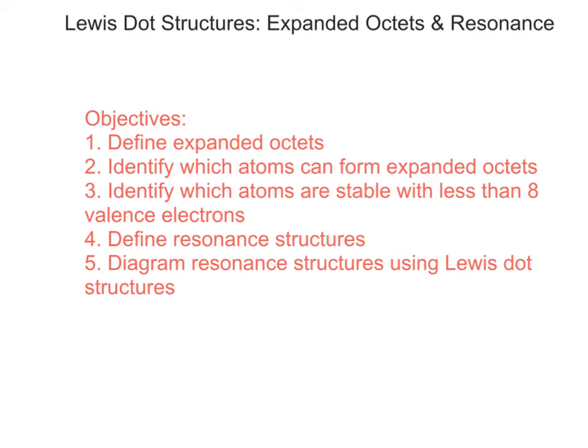Welcome to another video lesson on Lewis dot structures. In this video we're going to focus on expanded octets and resonance structures. We're going to define expanded octets, identify which atoms can form expanded octets, identify which atoms are stable with less than eight valence electrons, define resonance structures, and learn how to diagram those resonance structures using Lewis dot structures.